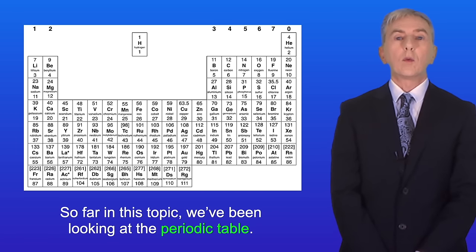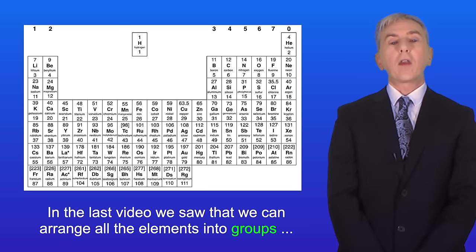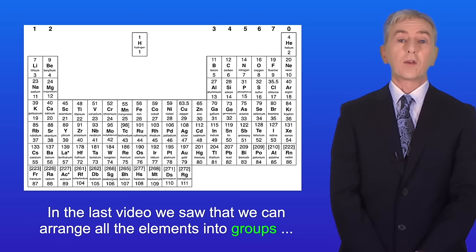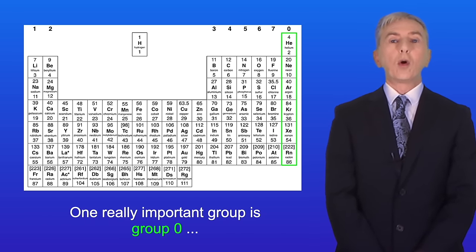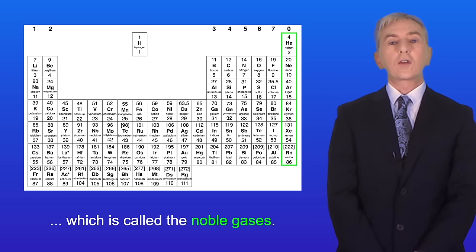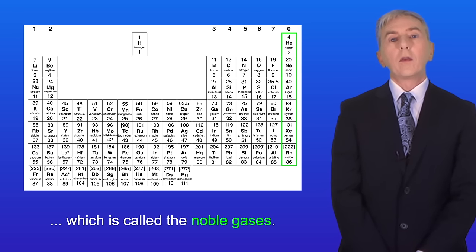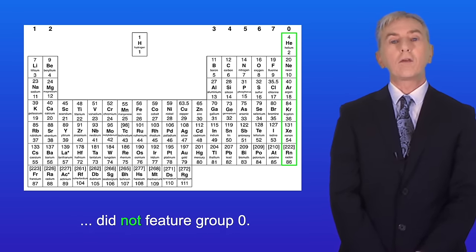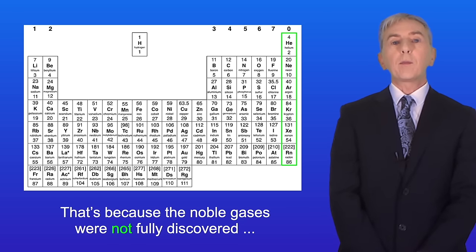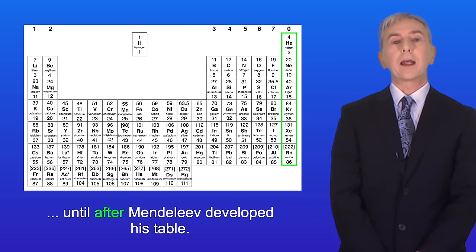So far on this topic we've been looking at the periodic table. In the last video we saw that we can arrange all the elements into groups with similar chemical properties. Now one really important group is group zero which is called the noble gases. The original periodic table produced by Dmitry Mendeleev did not feature group zero. And that's because the noble gases were not fully discovered until after Mendeleev developed his table.